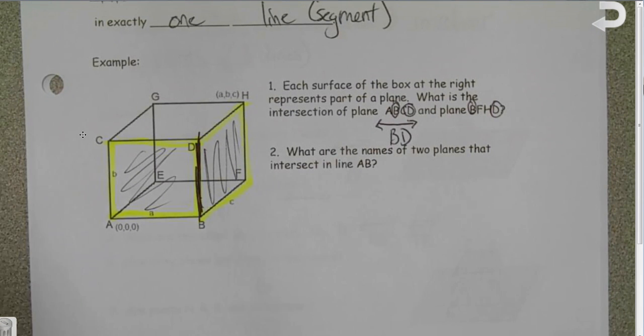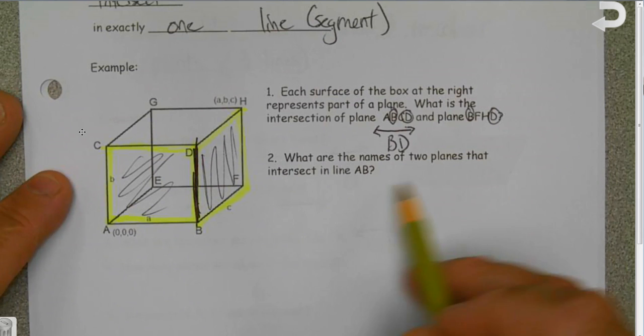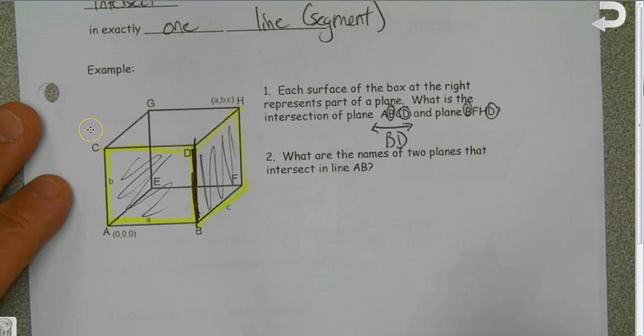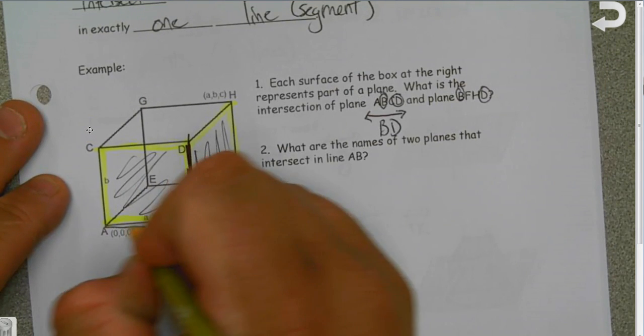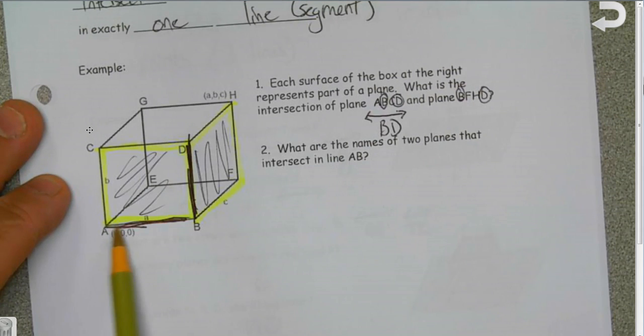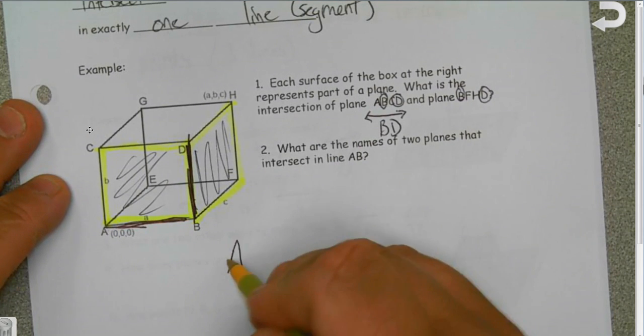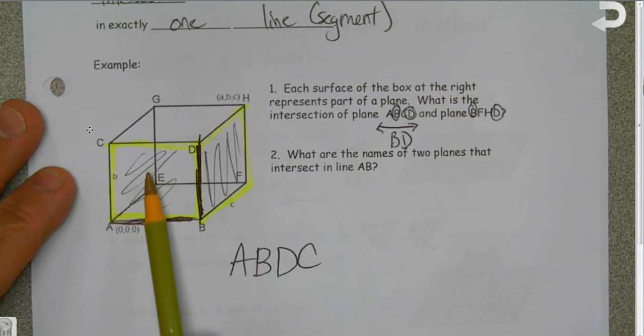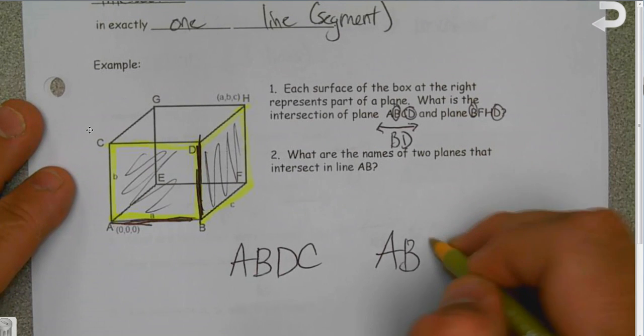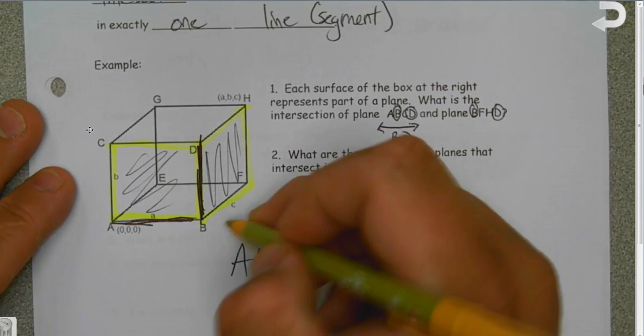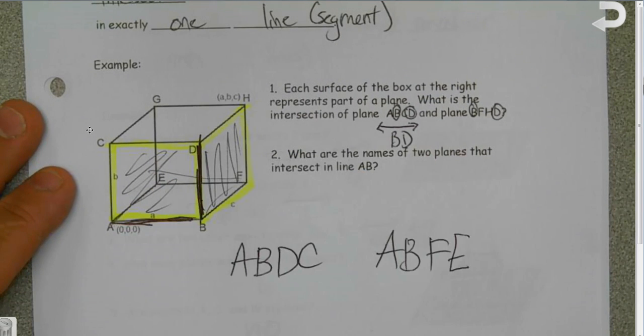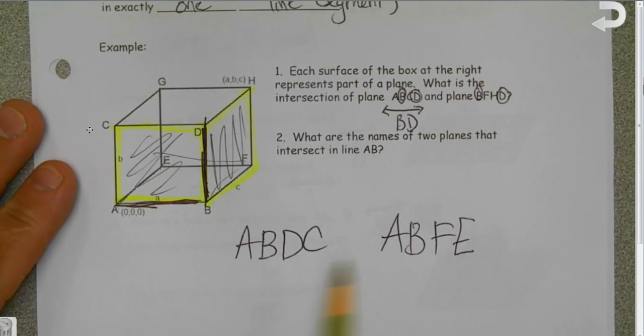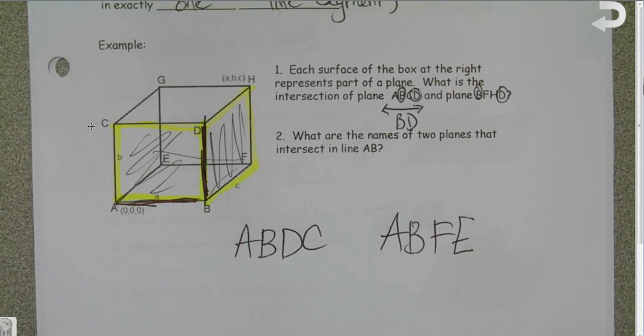If you can do it forward, you can also do it backwards. So what are the names of the two planes that intersect in line AB? Well, let's go to line AB. ABDC is the first plane, and then ABFE is the second plane, and so that's our answer for question two. Notice with plane there is no notation, it's just four letters make a plane.